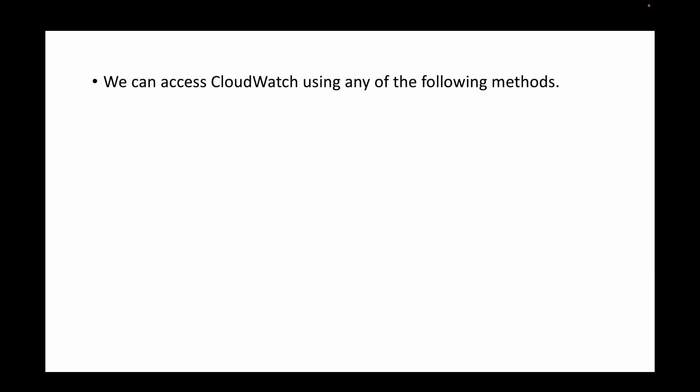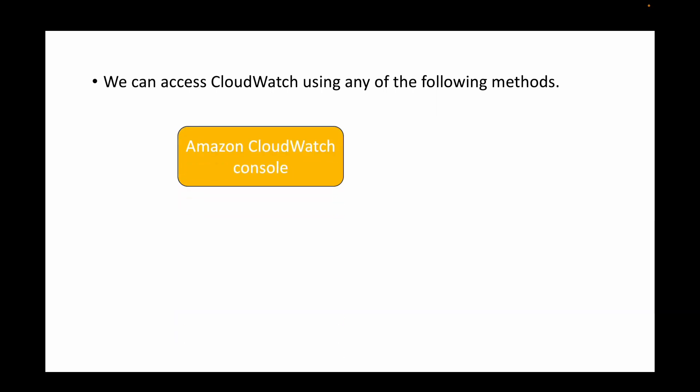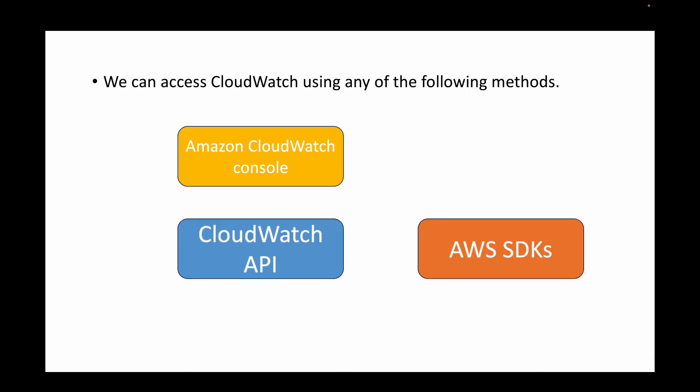There are different ways to access CloudWatch. One common way is using the Amazon CloudWatch console. We can also make use of the CloudWatch API, SDKs, and the AWS CLI. We will be looking at how to use the CloudWatch console — basically the AWS Management Console — to work with CloudWatch in the upcoming sessions.